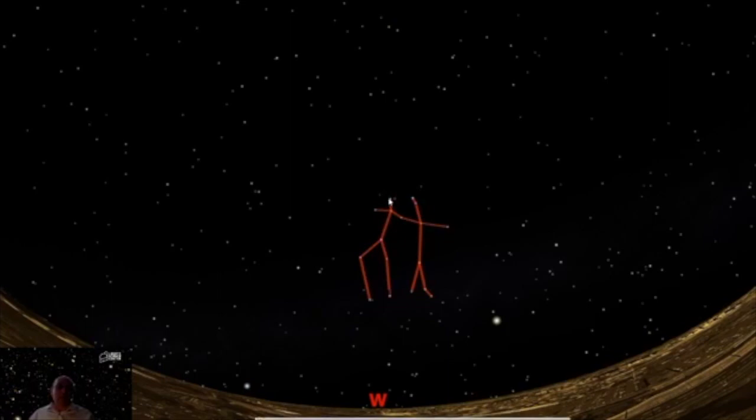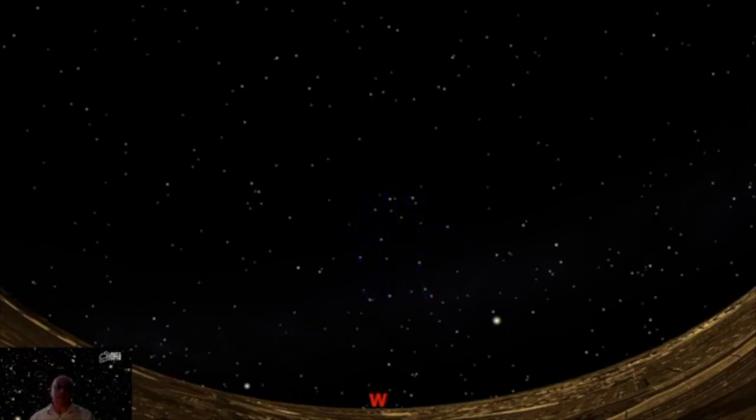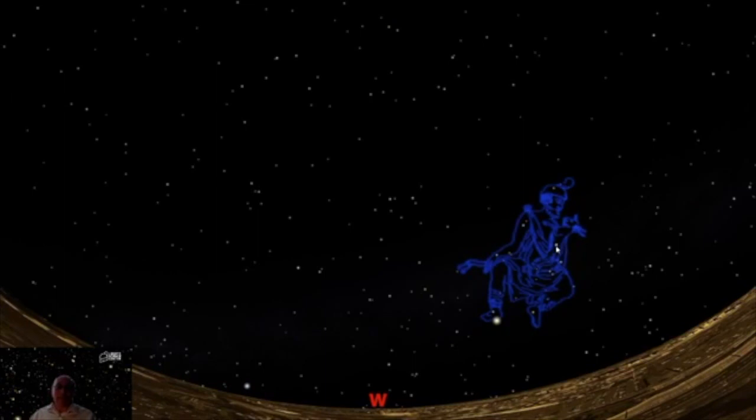A little more obvious maybe, these are the Gemini, the stars Pollux and Castor. Similarly, bright stars side by side make the heads of the Gemini twins, who went off and helped to go hunt the golden fleece with the great hero Jason. And then next to that we have Auriga the charioteer, obviously a man holding a baby goat as he drives his chariot. In fact, the bright star here, Capella, means the little goat.